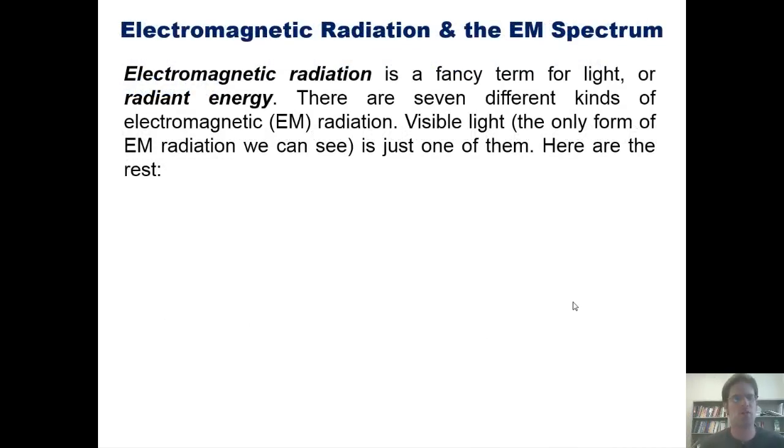Electromagnetic radiation is a fancy term for light or radiant energy. There are seven different kinds of electromagnetic or EM radiation. Visible light, which is the only form of EM radiation we can see, is just one of them.